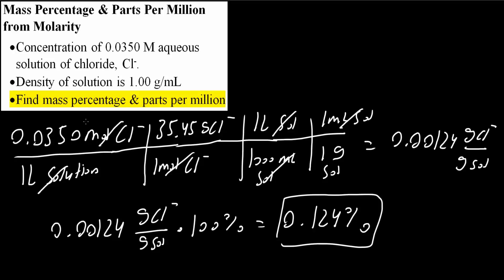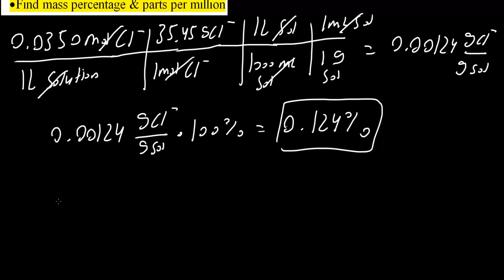Next we will do parts per million. For parts per million, once we have it in this form, 0.0124 grams of Cl minus divided by grams of solution, all we need to do is multiply by 10 raised to 6. This gives us ppm, and we get 1240 ppm. That is all we need to do for these two problems.